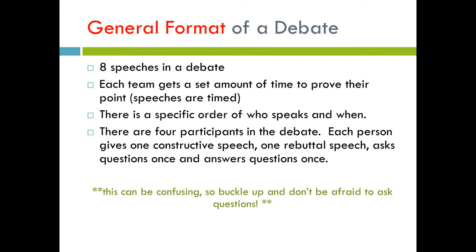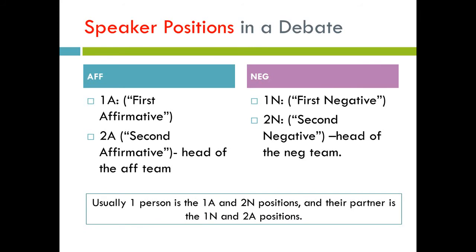Just a disclaimer: this can be really confusing, so buckle up and don't be afraid to ask questions in the comments section or rewatch parts that you need re-explained. There are multiple speaker positions in a debate. On the AFT team, there is a 1A, or first affirmative speaker, and a 2A, second affirmative speaker — the 2A is the head of the AFT team. On the NEG team, there's the 1N, or first negative, and the 2N, or second negative — the 2N is the head of the NEG team. Usually one person is the 1A and 2N, and their partner is the 1N and 2A. So when I say I'm a true blue 2N, that means I normally give the 1A and 2N speeches, and my partner gives the 1N and 2A speeches.